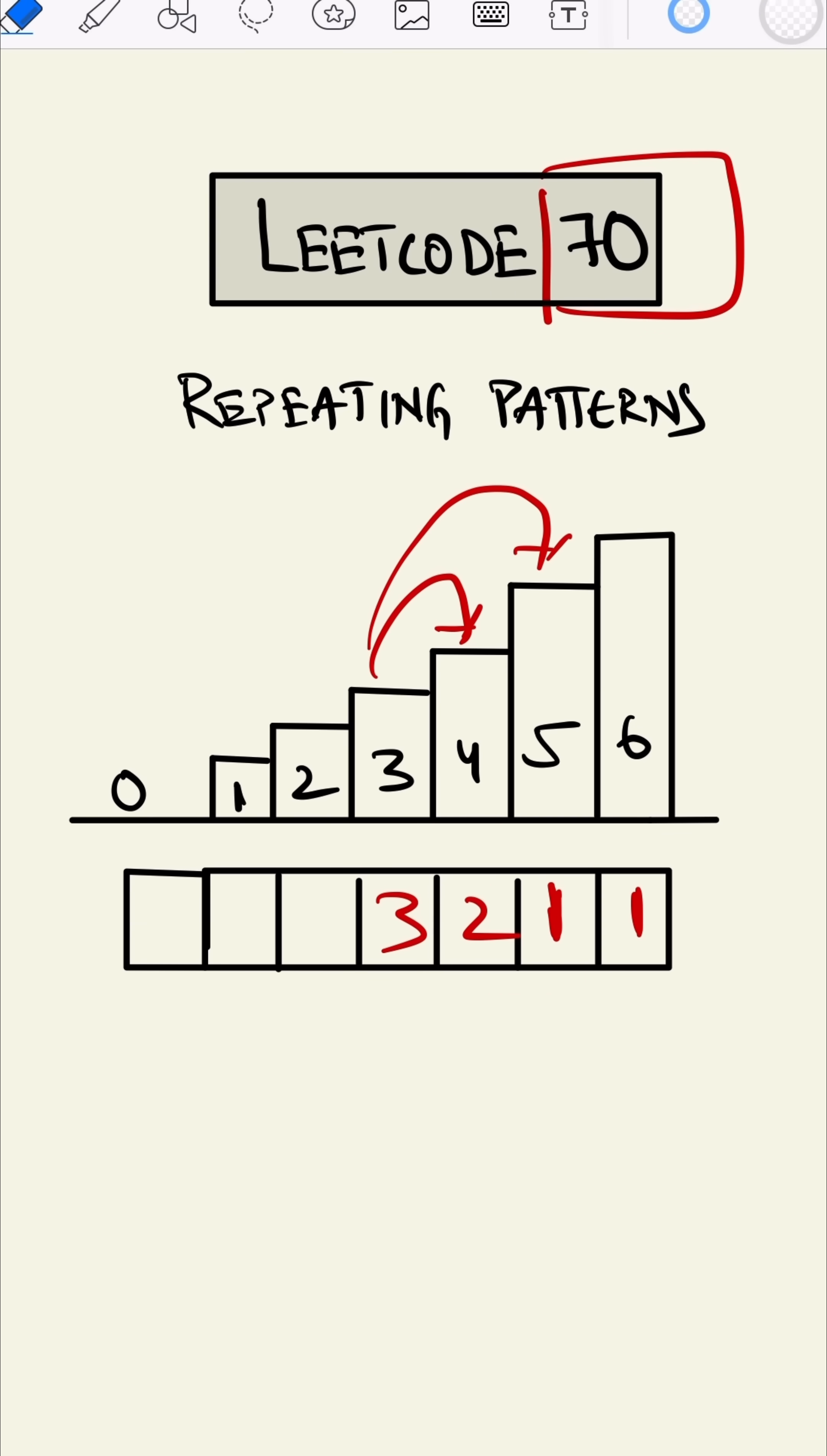Similarly, from step two, we can go one step to three or two steps to four. So addition of these two, which is five. We can keep on doing this.